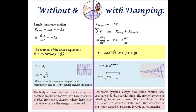We define the damping constant gamma as b over m. It is clear that the amplitude is not constant but decreases with time because of the exponential factor e^(−γt/2).